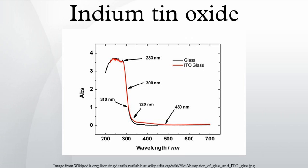ITO was also used as a sensor coating in the later Kodak DCS cameras, starting with the Kodak DCS 520, as a means of increasing blue channel response. ITO thin film strain gauges can operate at temperatures up to 1400°C and can be used in harsh environments, such as gas turbines, jet engines, and rocket engines.